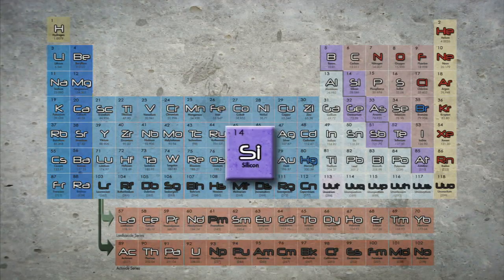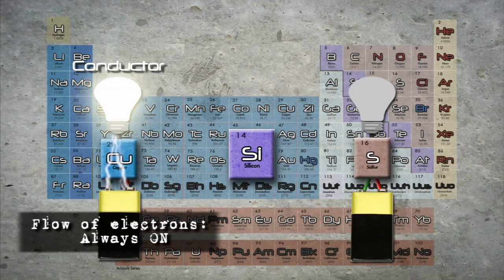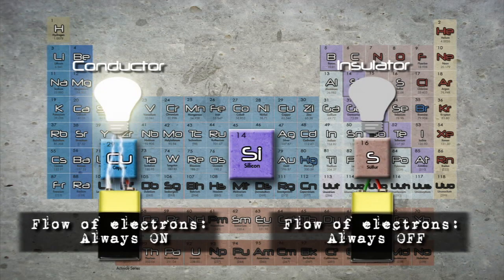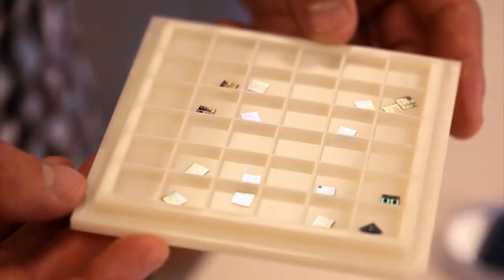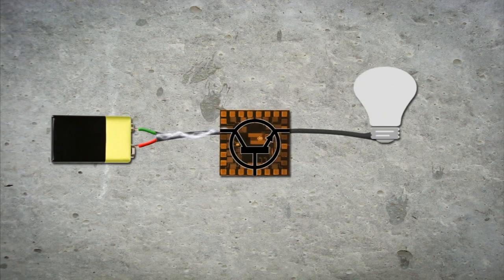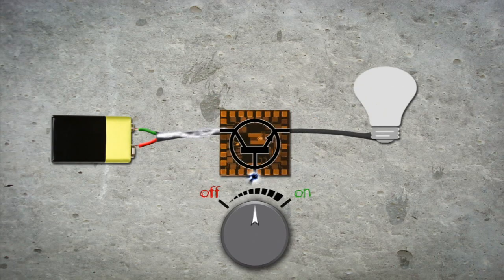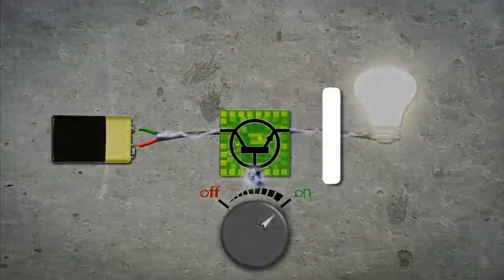For semiconductors like silicon, the electric conductivity is somewhere in between a conductor and an insulator. By exploiting these properties, scientists developed very small transistors on silicon chips. A transistor is a device that can regulate an electric signal. The semiconductor element of the transistor is used as a switch, where the strength of an incoming current decides whether the switch is going to be on or off — or one or zero — which forms the basis for all the modern technology that we have.